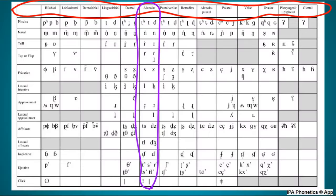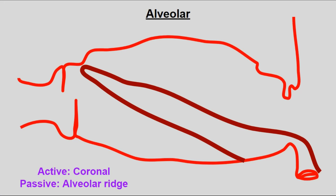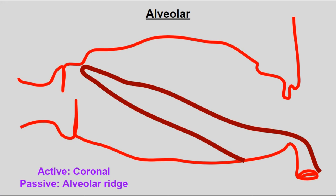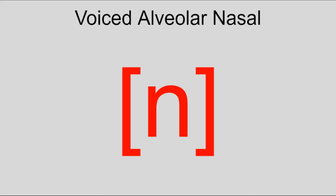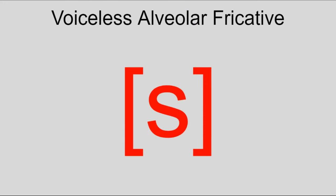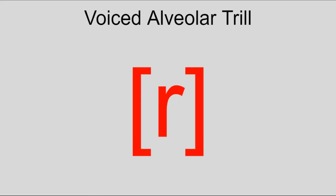Otherwise you'll find those sounds in the next place of articulation: alveolar, which is produced with the tip of the tongue on the alveolar ridge — the ridge behind the teeth. Some examples are T, D, and N, but there's also S, Z, R, and L.